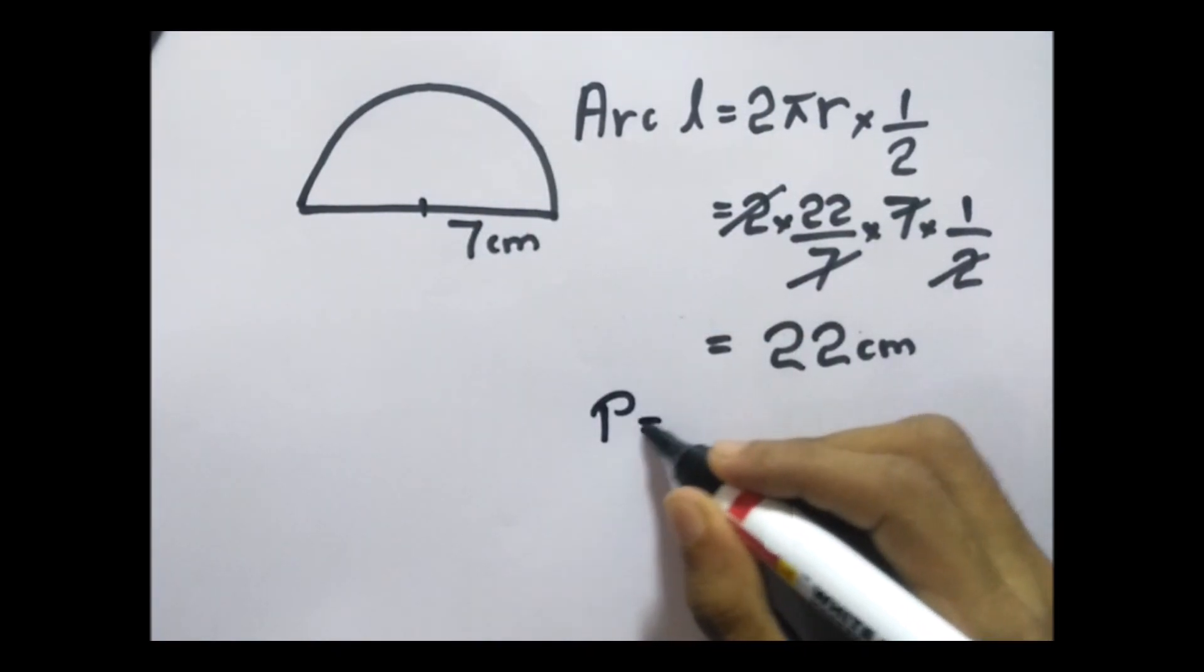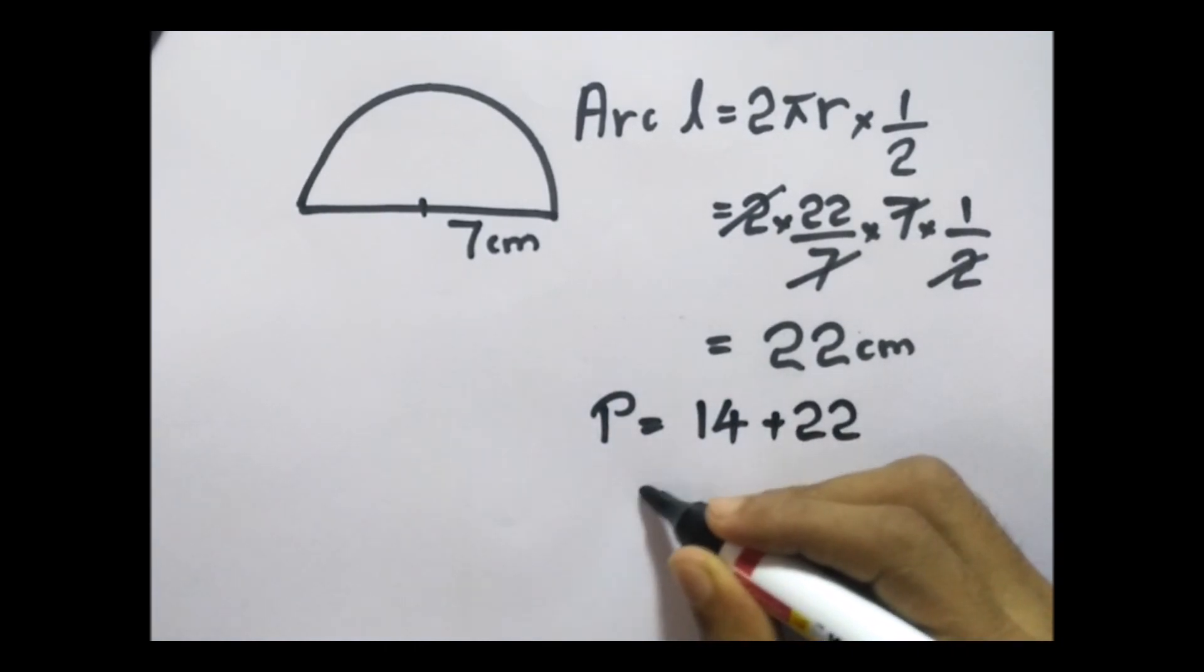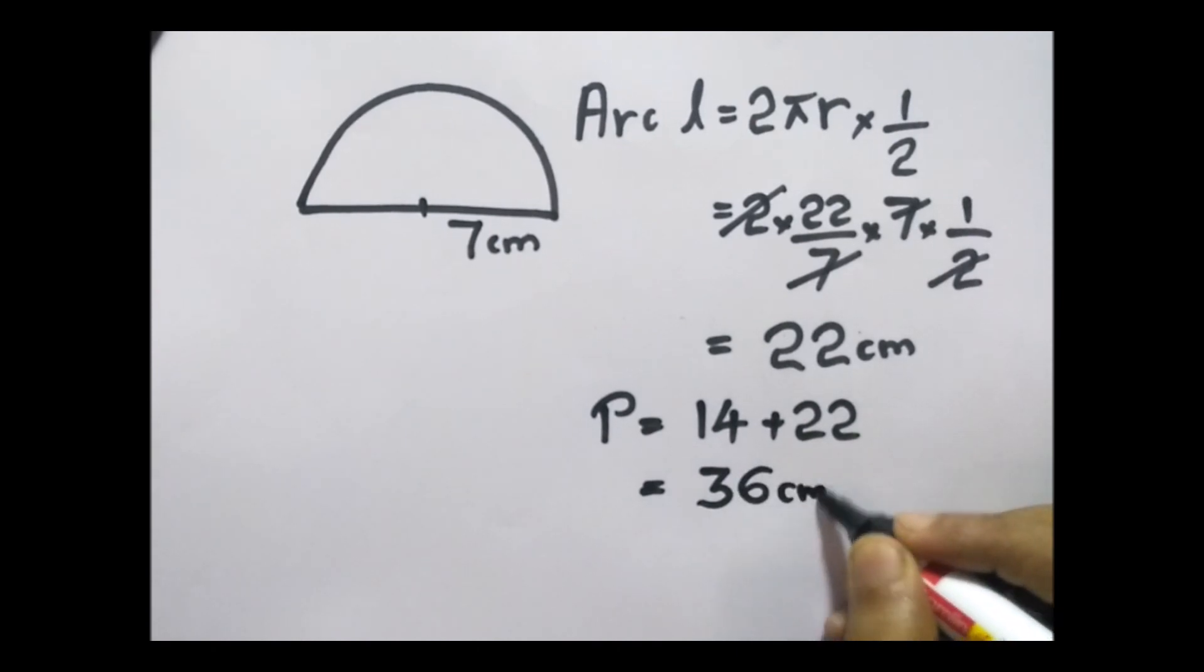Perimeter equals 14 plus 22, which is 36 centimeters.